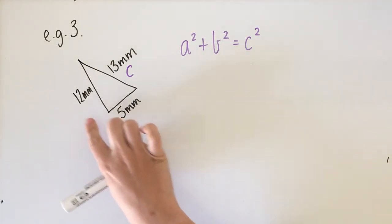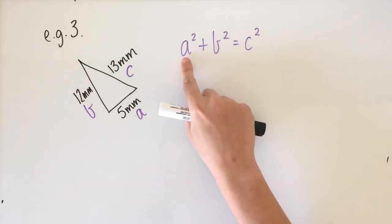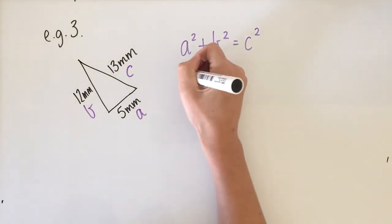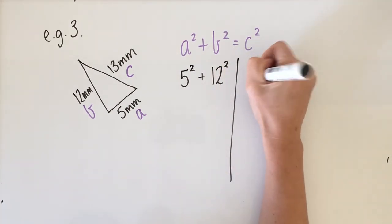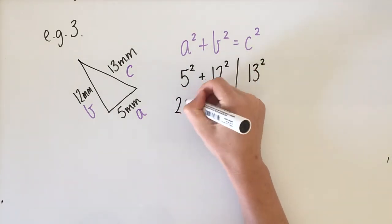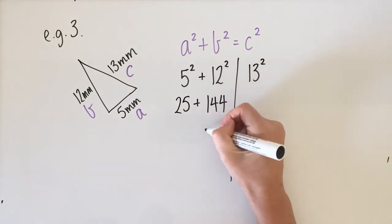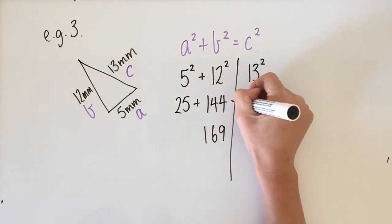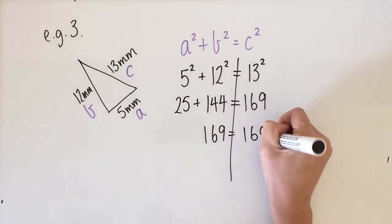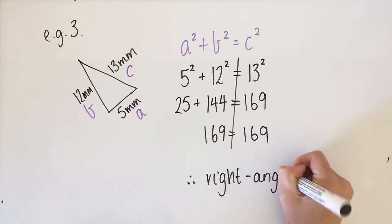Now substitute the pronumerals with our numbers. A becomes 5 squared, b becomes 12 squared, and c becomes 13 squared. 5 squared is 25, 12 squared is 144, and adding those together we get 169. If you don't know what 13 squared is, you can use your calculator — 13 squared is 169. So we can say these are equal, which means it is a right-angled triangle.